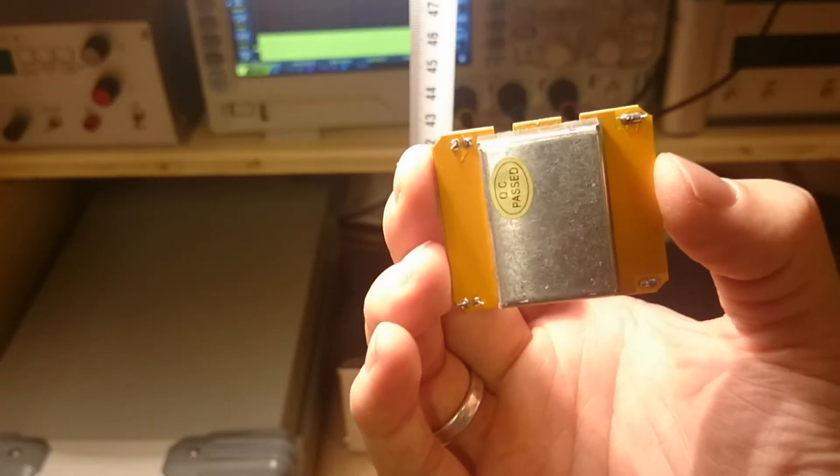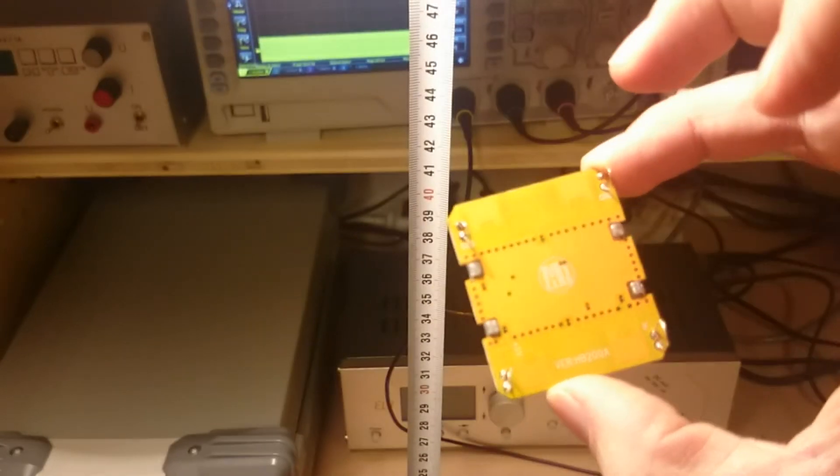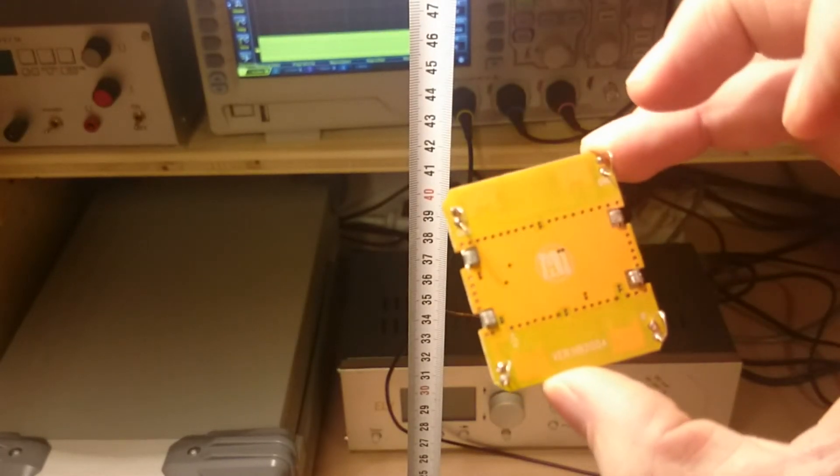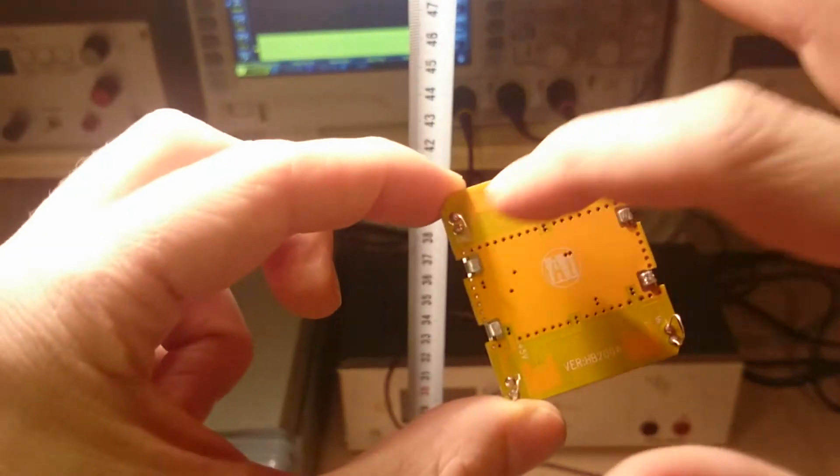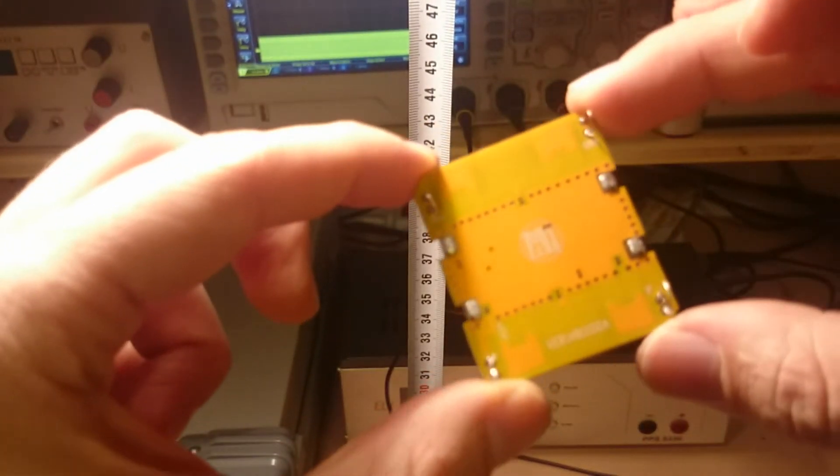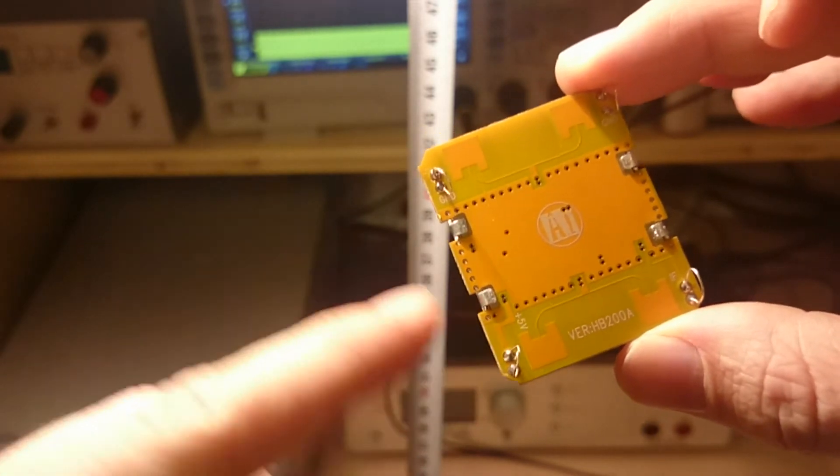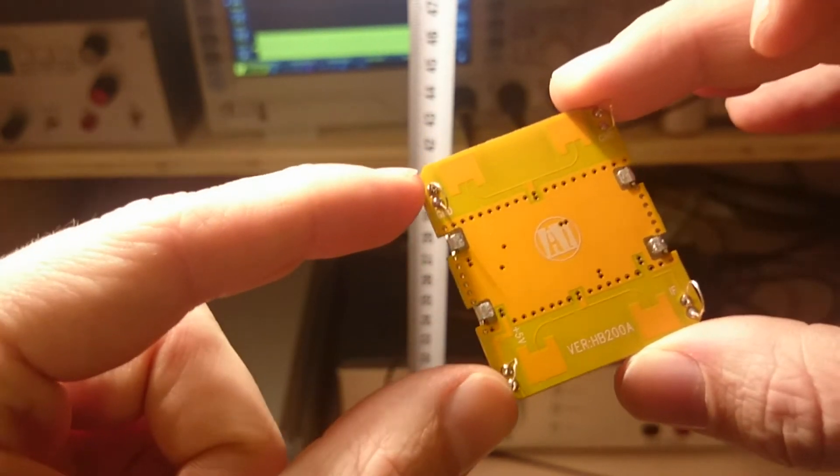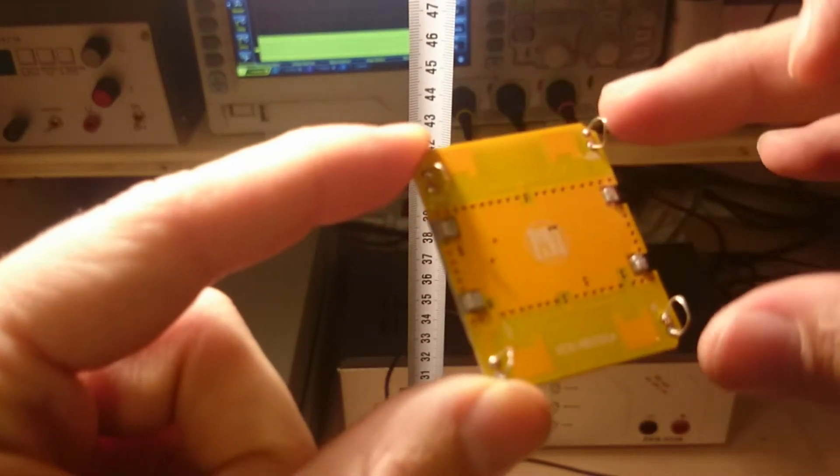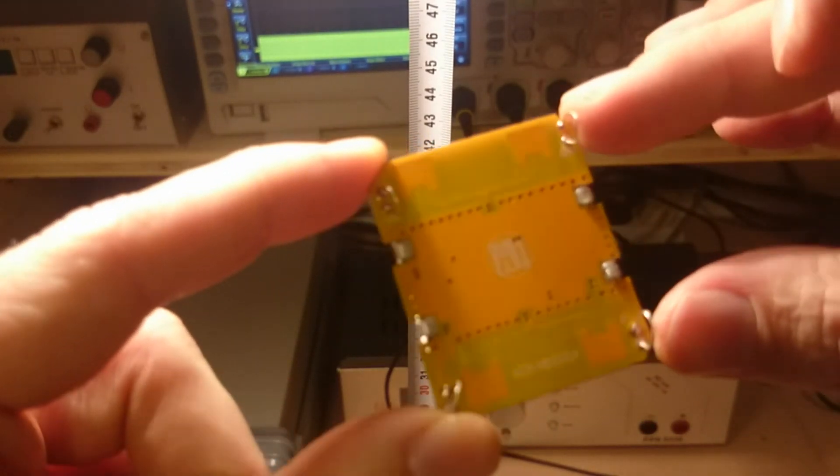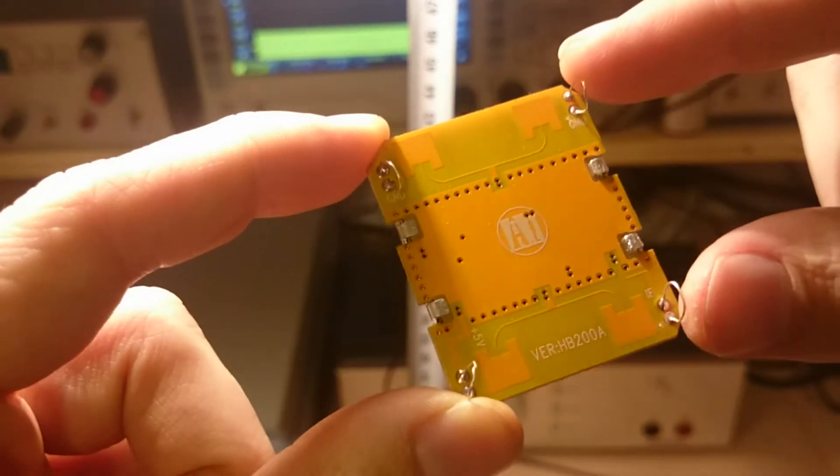Let's have a look at the radar module from Tindi. It costs about 8 US dollars. Here we can see the simple patch antennas for the receiver and the transmitter. It is supplied with 5 volts DC between these two connections and you get the output signal here, which is called intermodulation frequency.